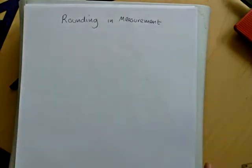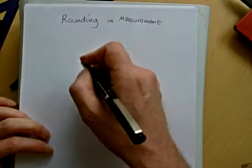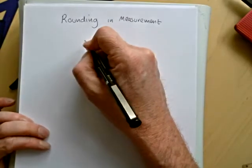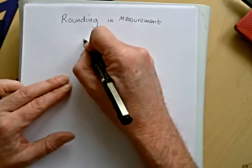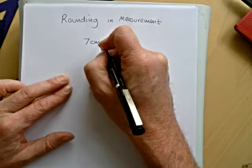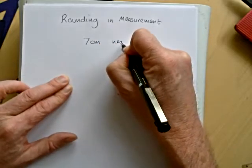So this short video is going to try and explain to you rounding. Let's suppose that I've measured the length of a leaf, and I said it's 7 centimeters to the nearest centimeter.